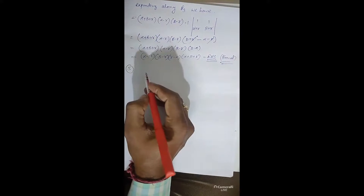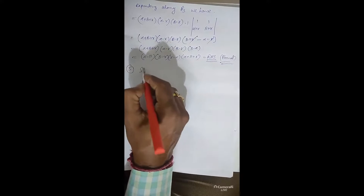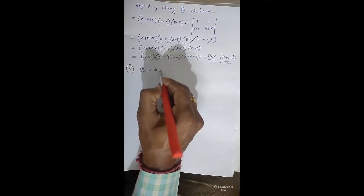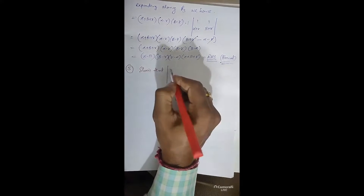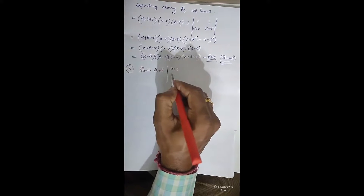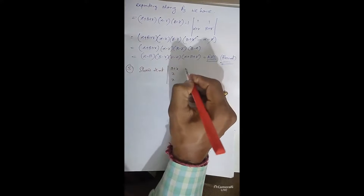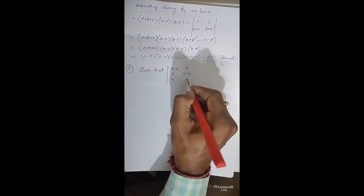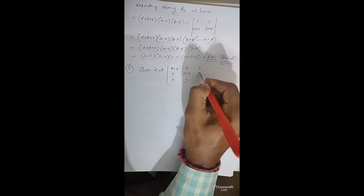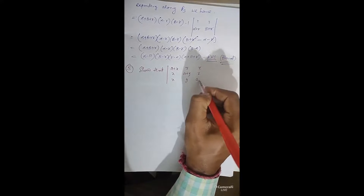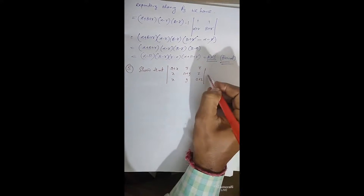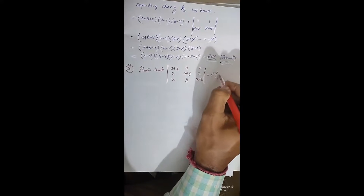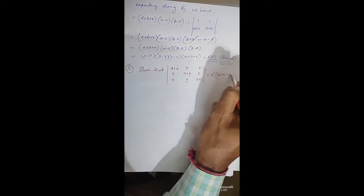Last problem, question number 5. Show that the determinant with rows (A+X, X, X), (Y, A+Y, Y), (Z, Z, A+Z) equals A²(A+X+Y+Z).